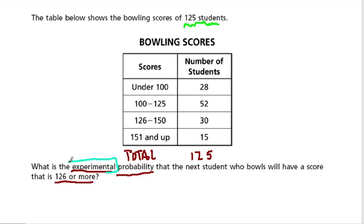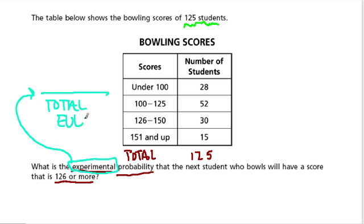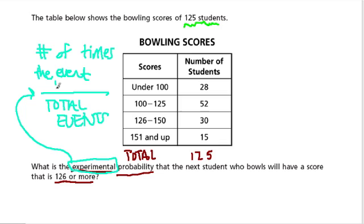Experimental probability is the probability based on your experiment. If you write it as a fraction, on the bottom we have the total outcomes — all the people or things that happened. In the numerator we have the number of times the event happened — meaning what we're looking for, whether it's a win, a loss, an age group, we call that the event. So that's my fraction: numerator over denominator.